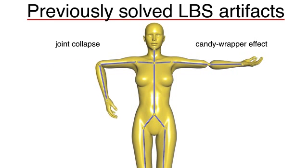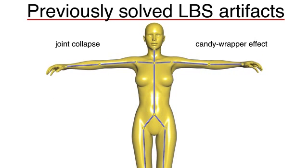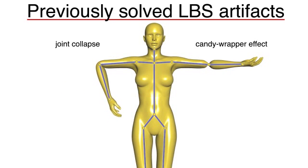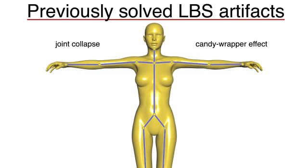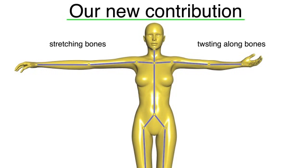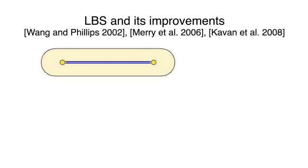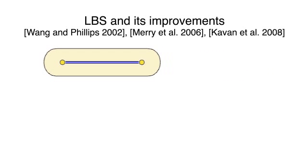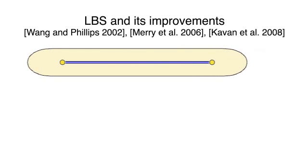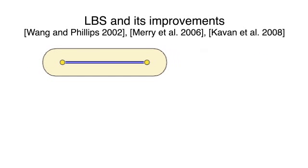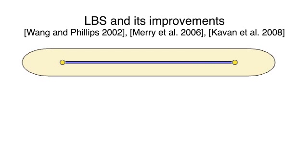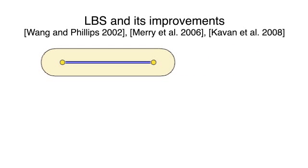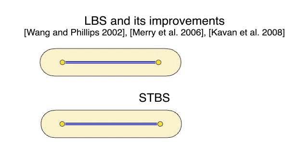Previous improvements to linear blend skinning focus on joint collapse and candy wrapper artifacts. We show that proper stretching and twisting lie outside the space of possible deformations with these methods, because they depend solely on bone weights. With only one bone controlling this cigar shape, the weights of linear blend skinning and those of its improvements must be one everywhere. Thus, stretching or squeezing the bone results in scaling the entire shape, exploding the regions beyond the bone's endpoints. The bone weights in our method must also be one everywhere.